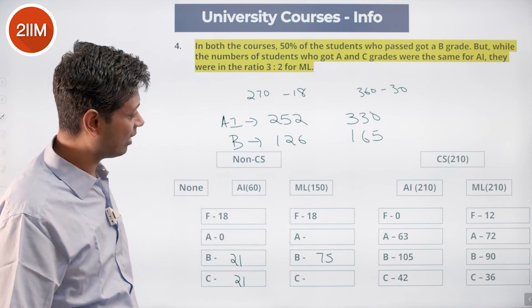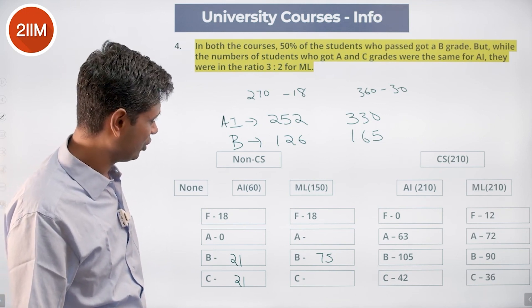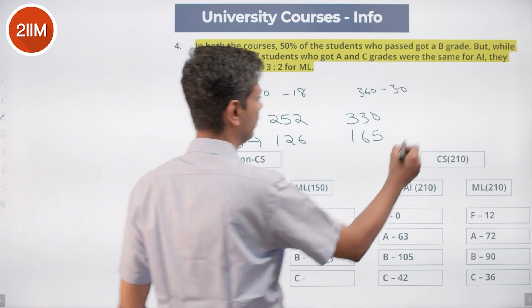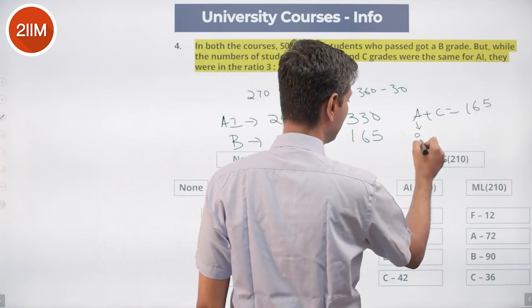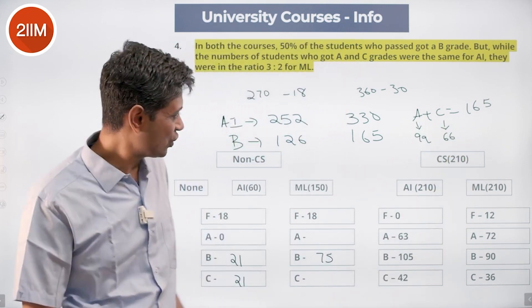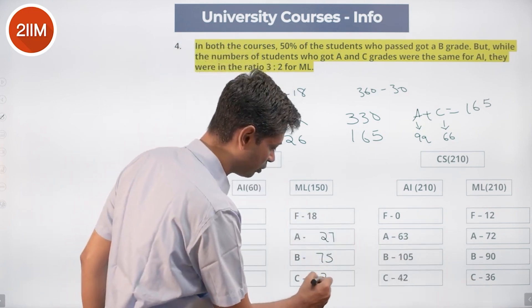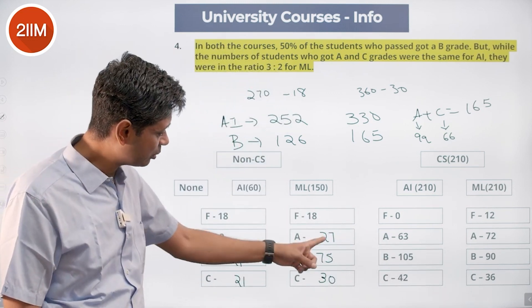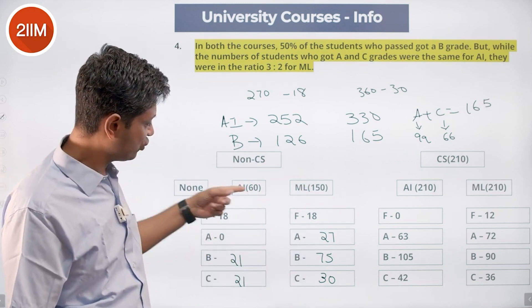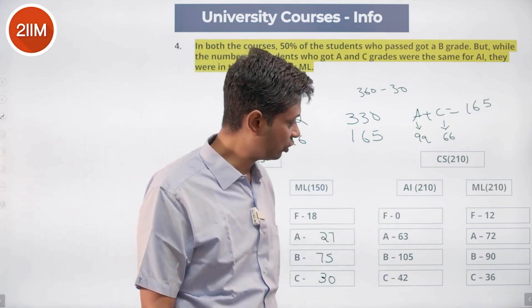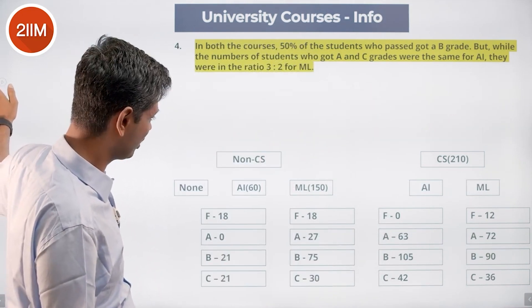For ML the A:C ratio is 3:2. Total passing minus B = 330 - 165 = 165 for A and C combined. 165/5 = 33, so A = 99 and C = 66. CS contributes A=72 and C=36, so non-CS in ML: A = 27 and C = 30. All totals reconcile: 18+27+75+30=150 for non-CS ML, and everything adds up. The full grid is now completely filled in.